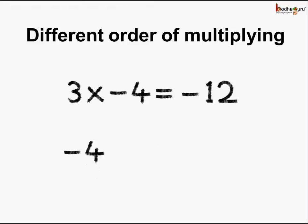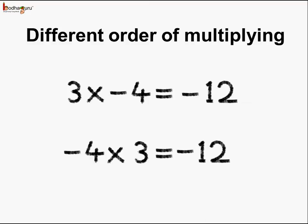We change the order of multiplication, so it is minus 4 multiplied by 3. Here we are multiplying a negative number by a positive number, so we will get a negative number. The product is 4 multiplied by 3, which is 12. Putting the negative sign we get the answer as minus 12.